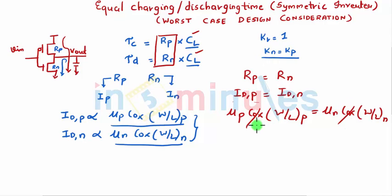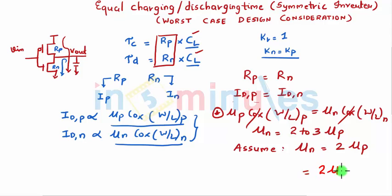Cox gets cancelled. We know that the mobility of electrons is faster than that of holes, two to three times. For understanding, let's assume that mobility of electrons is twice mobility of holes. If that's the case, let's substitute this: mu_n is equal to twice mu_p, so mu_n equal to 2 mu_p (W/L)_nMOS equals mu_p (W/L)_pMOS.